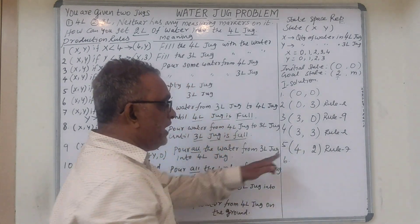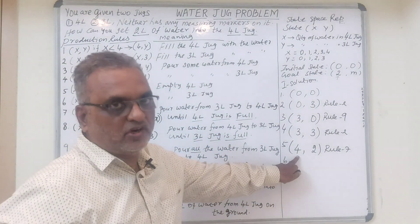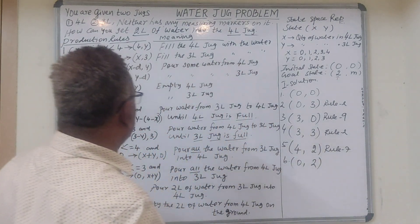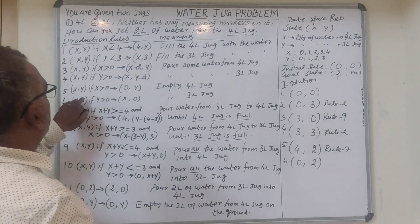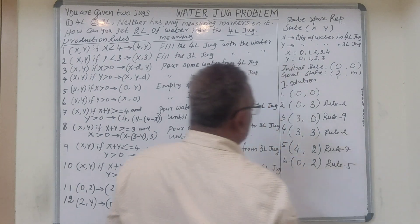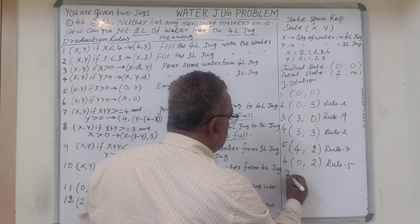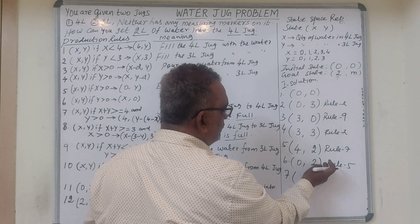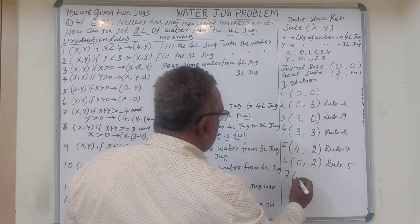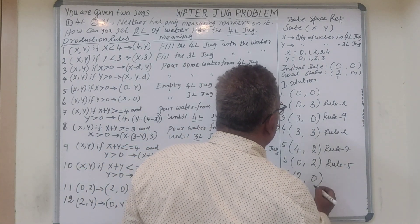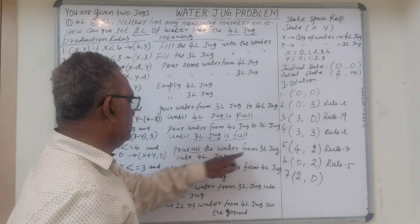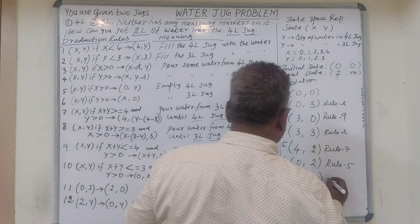Now we empty the 4-litre jug using rule number 5, giving state (0, 2). Finally, we transfer the 2 litres of water from the 3-litre jug into the 4-litre jug using rule number 9 — pour all the water from the 3-litre jug into the 4-litre jug — giving the goal state (2, 0).